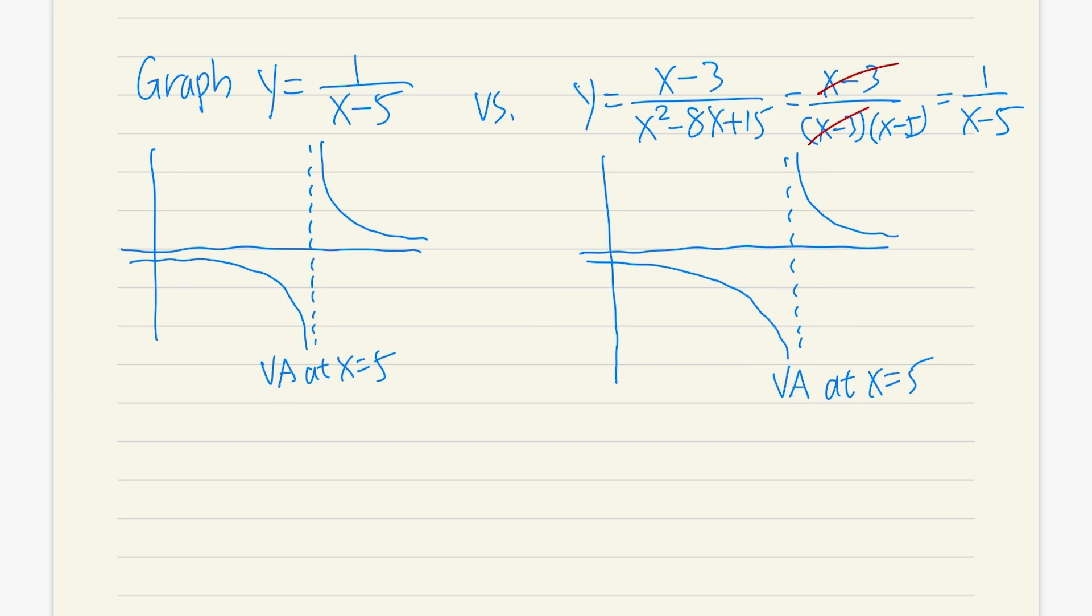However, whenever we are given the expression, make sure you look for the original expression before any cancellation. Originally, the denominator is this. Yes, we can factor it. We have x minus 3 times x minus 5. Because of the x minus 3 was on the bottom, so we have to also make sure that x cannot be equal to 3.